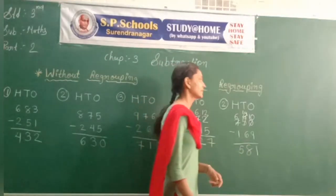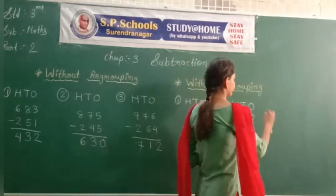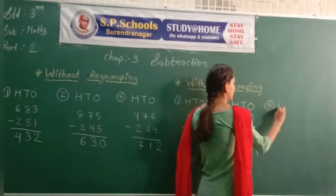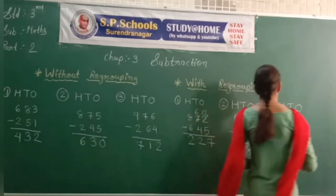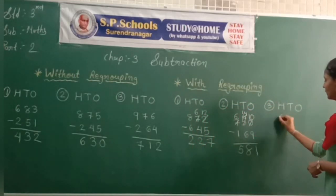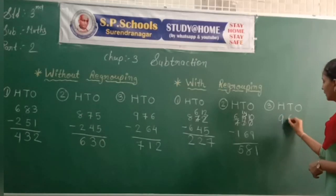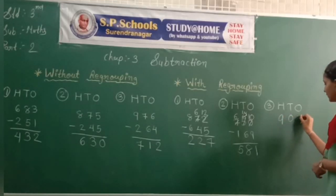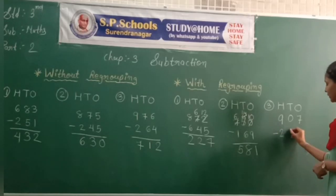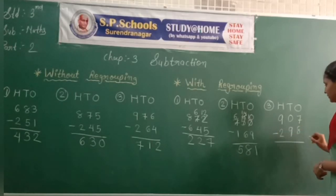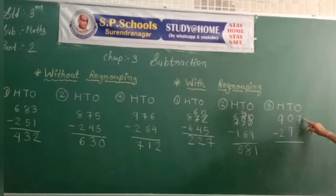Then next sum. Hundreds, tens, ones. 97x minus 298. Seven's place: 7 minus 8.